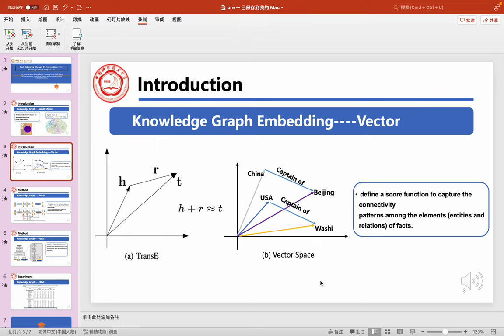Traditional methods using Knowledge Graph embedding models map entities and relations into vector space and define a score function to capture the connectivity patterns. However, since these patterns are very complex in the real world, it is difficult to define a score function to capture them.